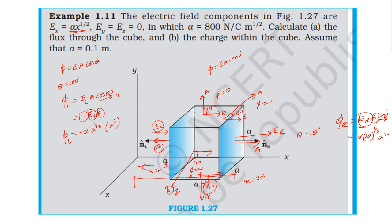The flux through the left face is negative and the flux through the right face is positive. The total flux equals the flux through the right face plus the flux through the left face, which is flux through the right face minus the magnitude of the left face contribution.